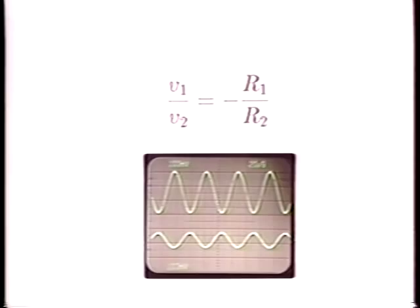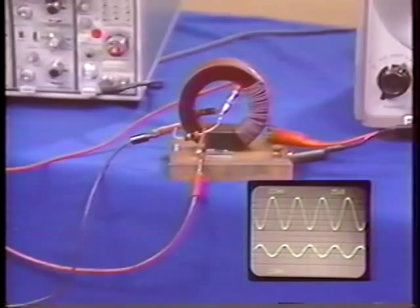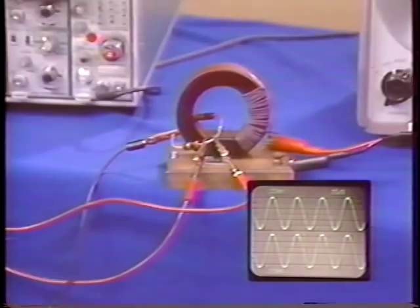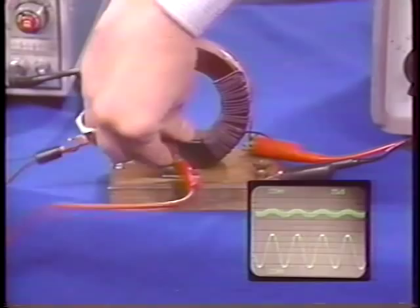If the probe leads follow the same paths, the signals should be the same. If we remove one of the leads and then connect the other one to its own ground, after having looped the lead through the core, what we see is this.